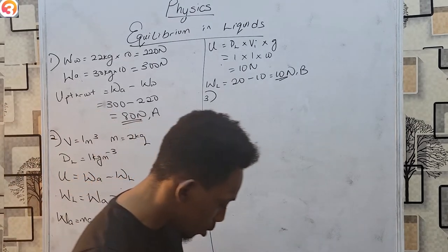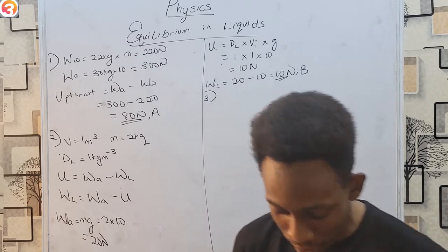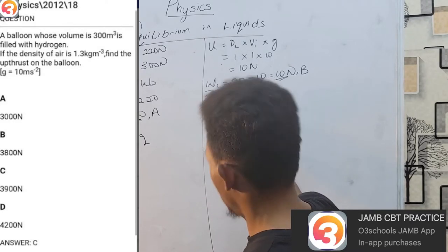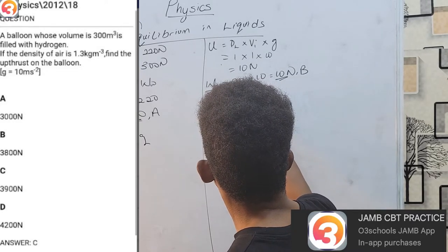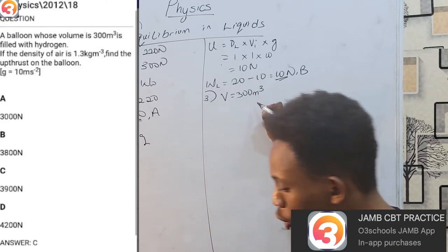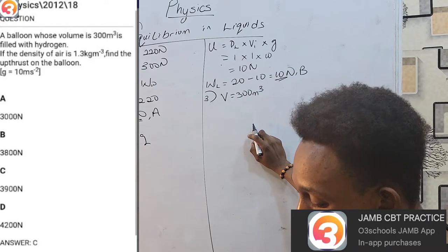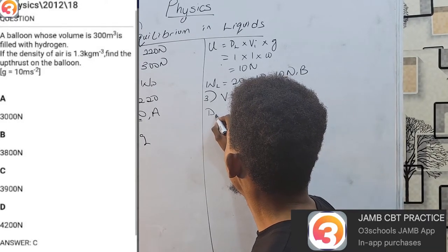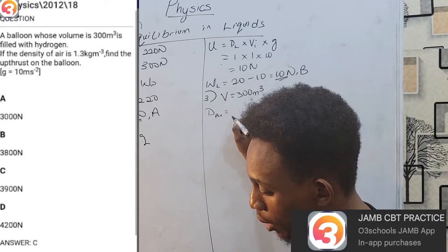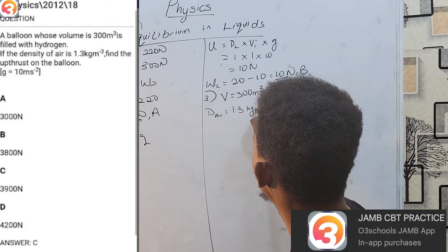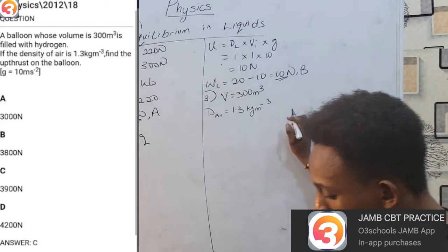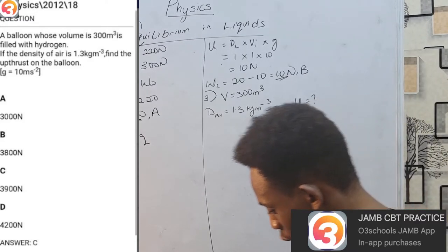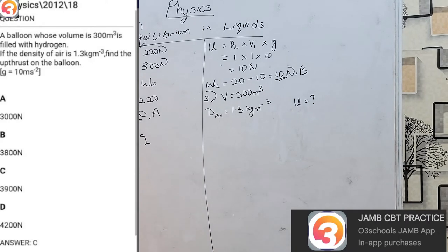Question 3 comes from 2012, question 18. A balloon whose volume is 300 m³ is filled with hydrogen. The density of air is 1.3 kg/m³. We need to find the upthrust on the balloon. Remember: equilibrium in liquids also applies to equilibrium in fluids, which includes gases. Air normally has negligible upthrust, but here we are dealing with hydrogen — much lighter than air — so the upthrust becomes significant.